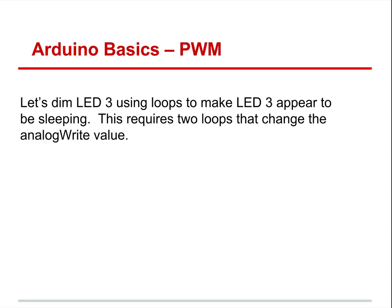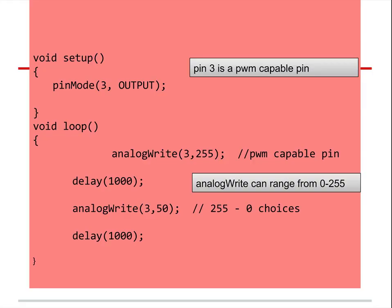That's the end of this tutorial — we'll get into more elaborate work with PWM in the next one. PWM allows you to use a function called analog write, where you can set any value from 255 all the way down to zero for pin three. It all depends on the LED threshold too, but we're not getting into that today — we're focused on programming.